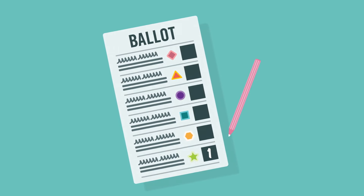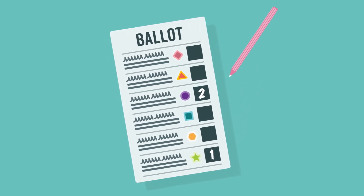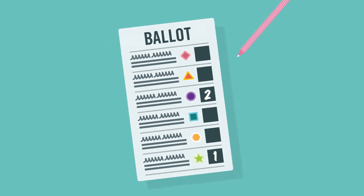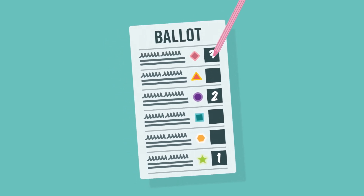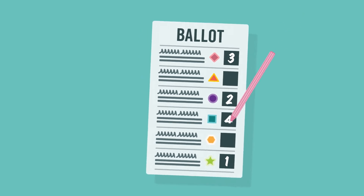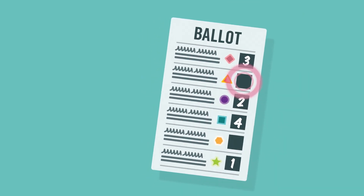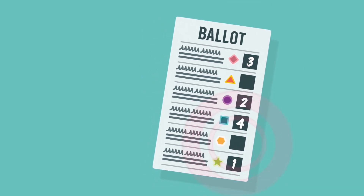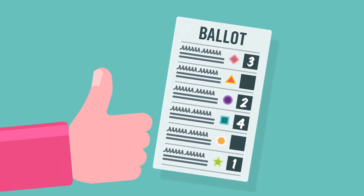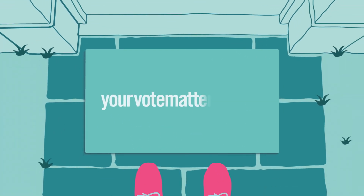Put a one next to your first choice, a two next to your second choice, a three next to your third, and so on. You can rank as many or as few candidates as you like. Find out more about how to vote at yourvotematters.co.uk.